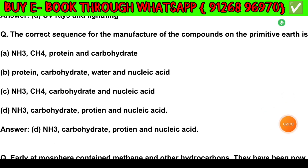Question number 6. The correct sequence for the manufacture of compounds on the primitive earth is: Option A — NH3, CH4, protein and carbohydrate. Option B — Protein, carbohydrate, water and nucleic acid. Option C — NH3, CH4, carbohydrate and nucleic acid. Option D — NH3, carbohydrate, protein and nucleic acid. The answer is Option D: NH3, carbohydrate, protein and nucleic acid.